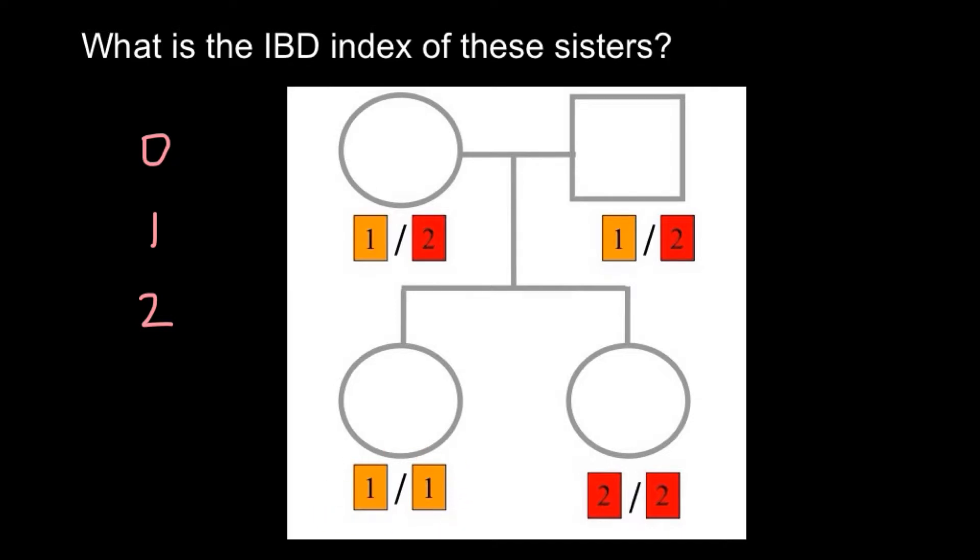So one locus, second locus - in these loci we can find that both alleles would be the same, or one allele would be the same, or none of the alleles would be the same.